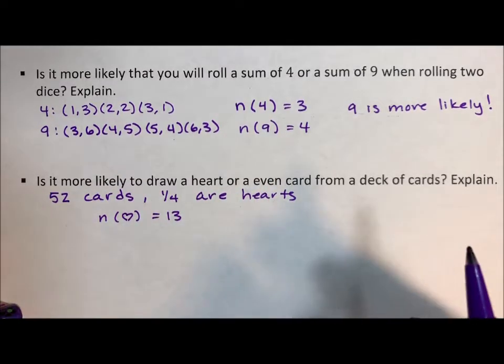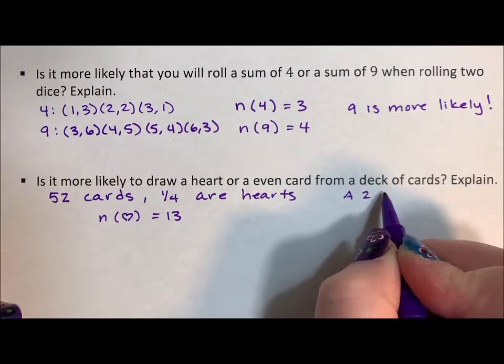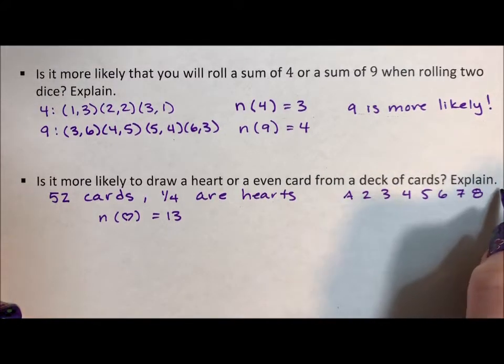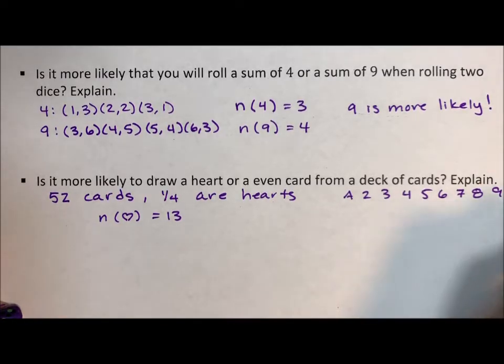Even cards. So the even cards: ace, two, three, four, five, six, seven, eight, nine, ten, and then the face cards jack, queen, king.